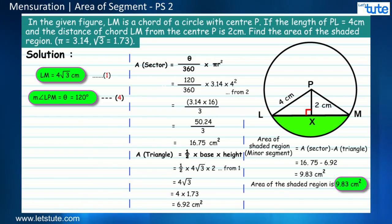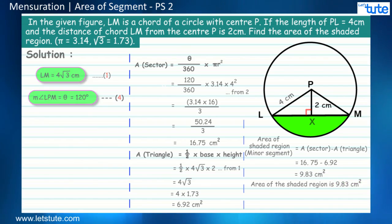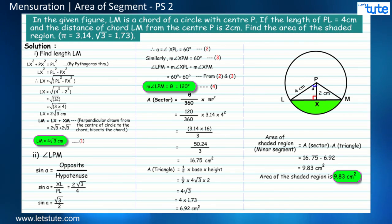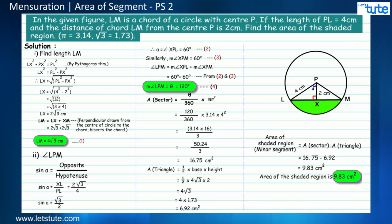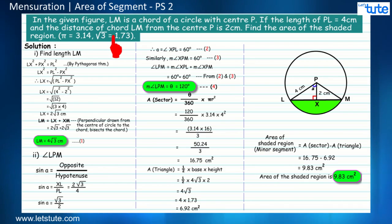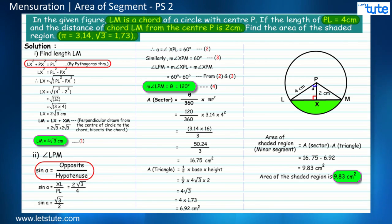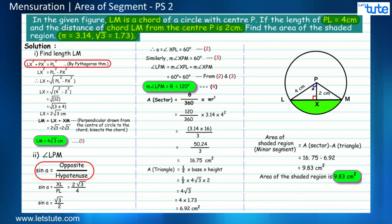Friends, this might look like a lengthy and difficult problem, but you have to relate all the properties and concepts to find the missing values. So read the question carefully, check what the given information is, what relations can be established, correlate the given information, and eventually solve it.